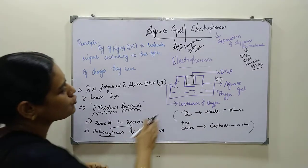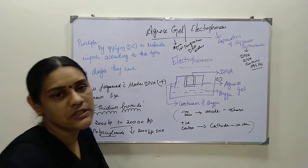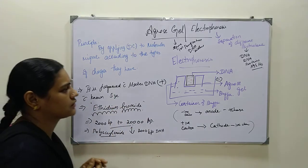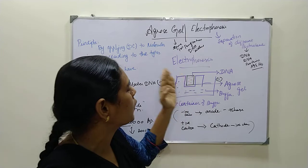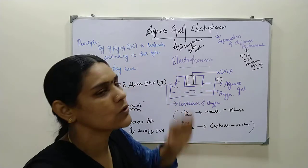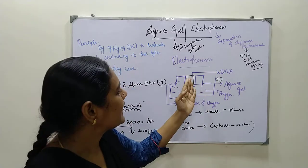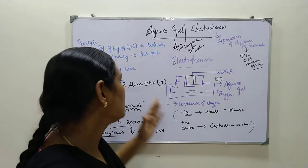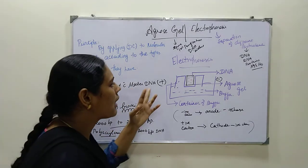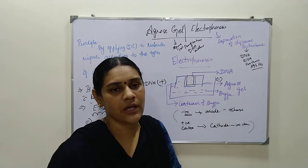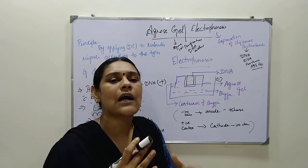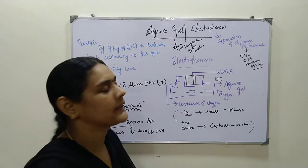This agarose gel electrophoresis is also performed with marker DNA, which is of a known size. When we are running the DNA or the mixture of biomolecules in the gel, we will be adding some DNA of known size along with the mixture. Marker DNA means DNA of a known size. We use marker DNA to identify the accurate size of the unknown DNA.